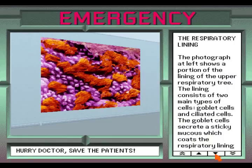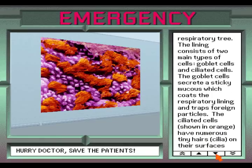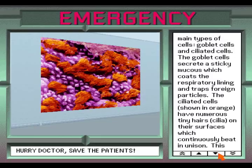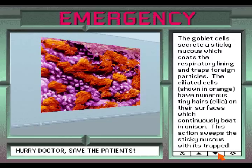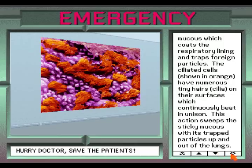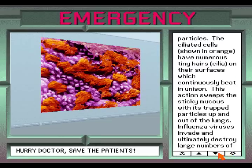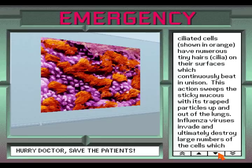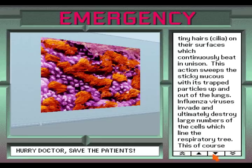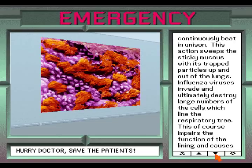The respiratory lining. The photograph at left shows a portion of the lining of the upper respiratory tree. The lining consists of two main types of cells: goblet cells and ciliated cells. The goblet cells secrete a sticky mucus which coats the respiratory lining and traps foreign particles. The ciliated cells, shown in orange, have numerous tiny hairs — cilia — on their surfaces which continuously beat in unison. This action sweeps the sticky mucus with its trapped particles up and out of the lungs.